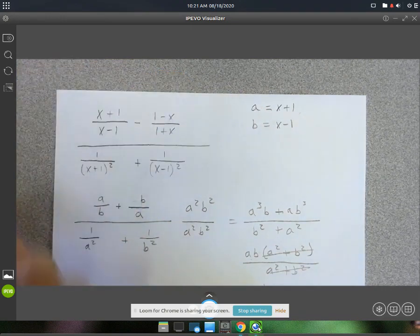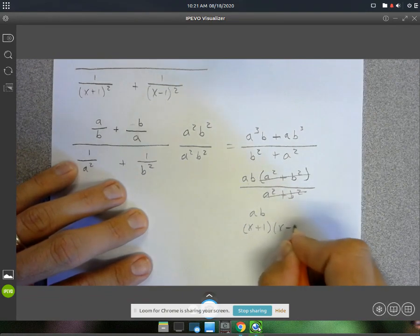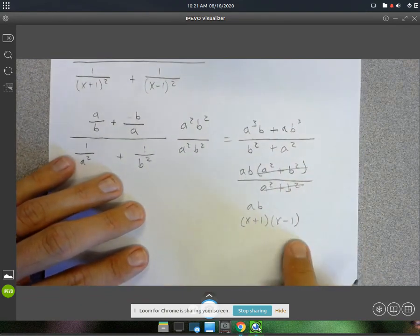All we'll do is we'll just make the substitution again. Remember, a was equal to x plus 1. And b was equal to x minus 1. x plus 1. x minus 1. This could be your answer,